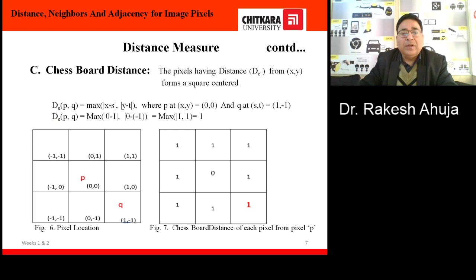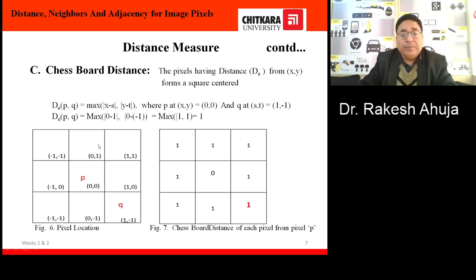Now we come to discuss the last type of distance measure, which is chessboard distance. The chessboard distance is given by: maximum of |x minus s| and |y minus t|. Taking the same example with p at (0, 0) and q at (1, -1), putting the values in this formula we obtain the value 1. Likewise, we can calculate the distance of the rest of these pixels, and this is the resulting matrix of chessboard distance.